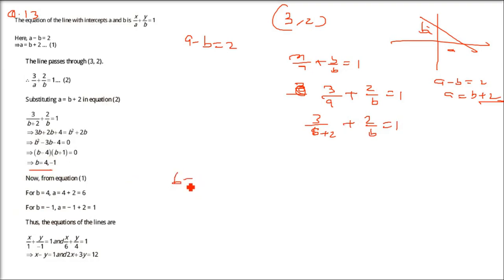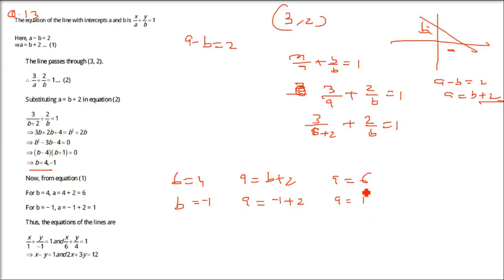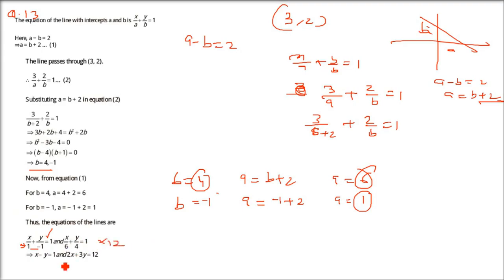This forms a quadratic equation. Solving it, b comes as 4 and -1. When b = 4, a = 6; when b = -1, a = -1 + 2 = 1. For the first case (a = 1, b = -1): x/1 + y/(-1) = 1 gives x - y = 1. For the second case (a = 6, b = 4): x/6 + y/4 = 1; multiply by 12 to get 2x + 3y = 12. These are the two equations.